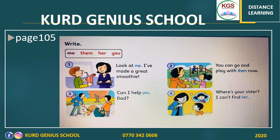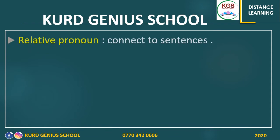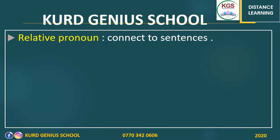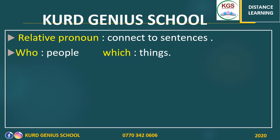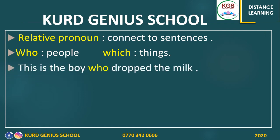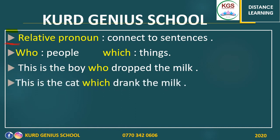After that, we have the previous subject which was relative pronouns. We use relative pronouns to join two sentences or connect two facts together. We had 'who' — we use it with people — and 'which' — we use it with animals or things. For example: 'This is the boy who dropped the milk.' And: 'This is the cat which drank the milk.'